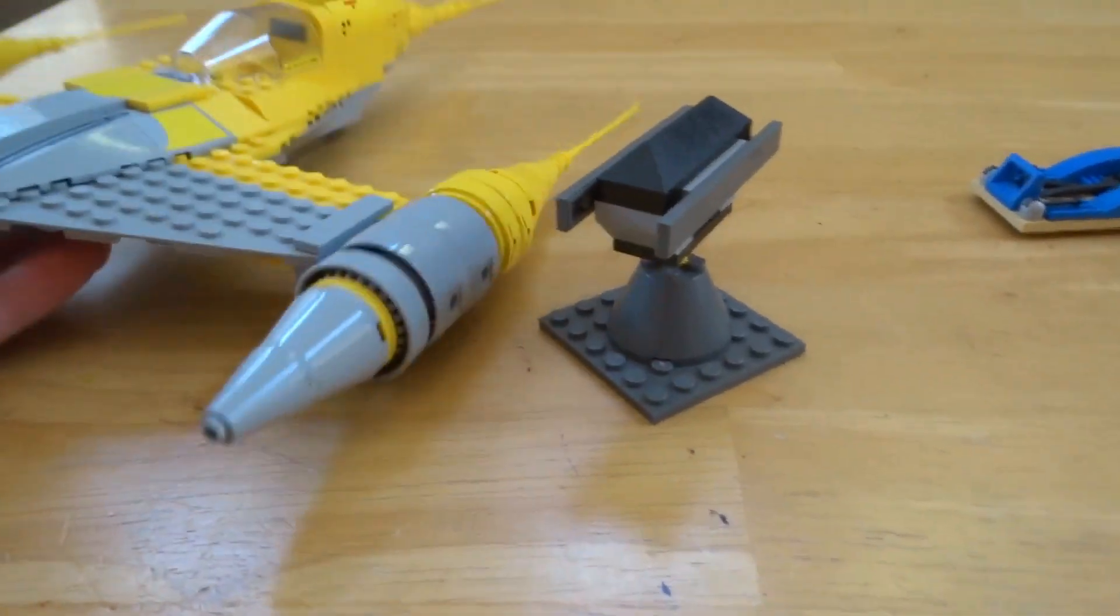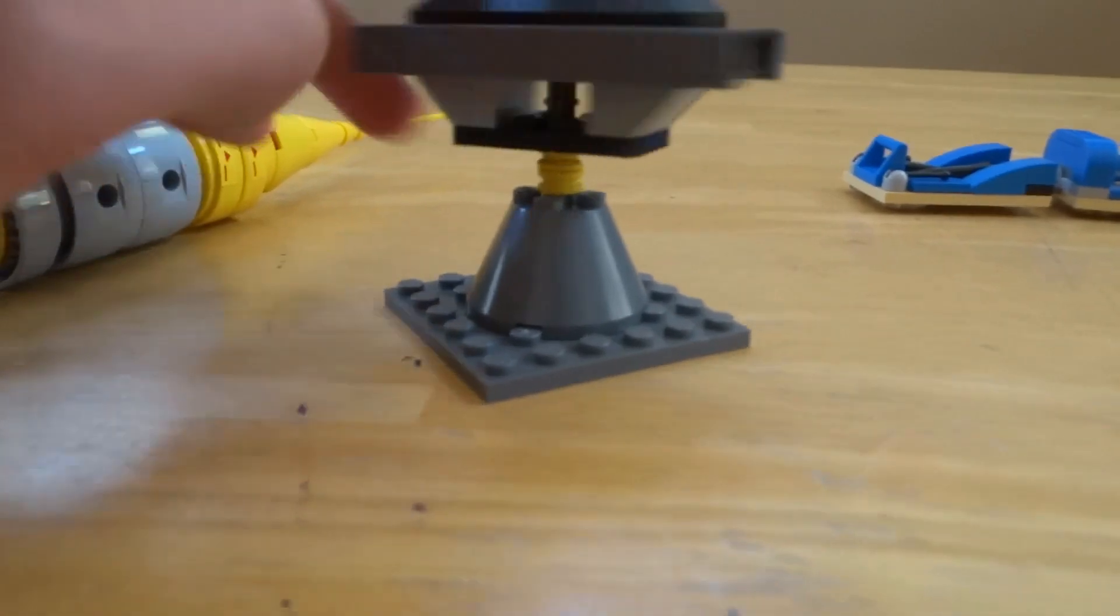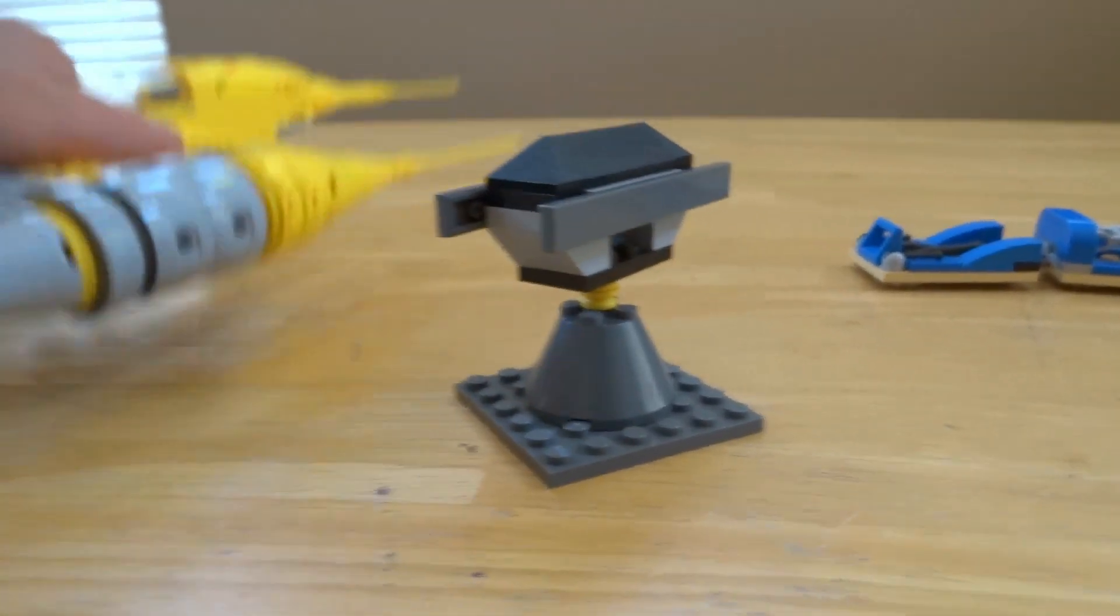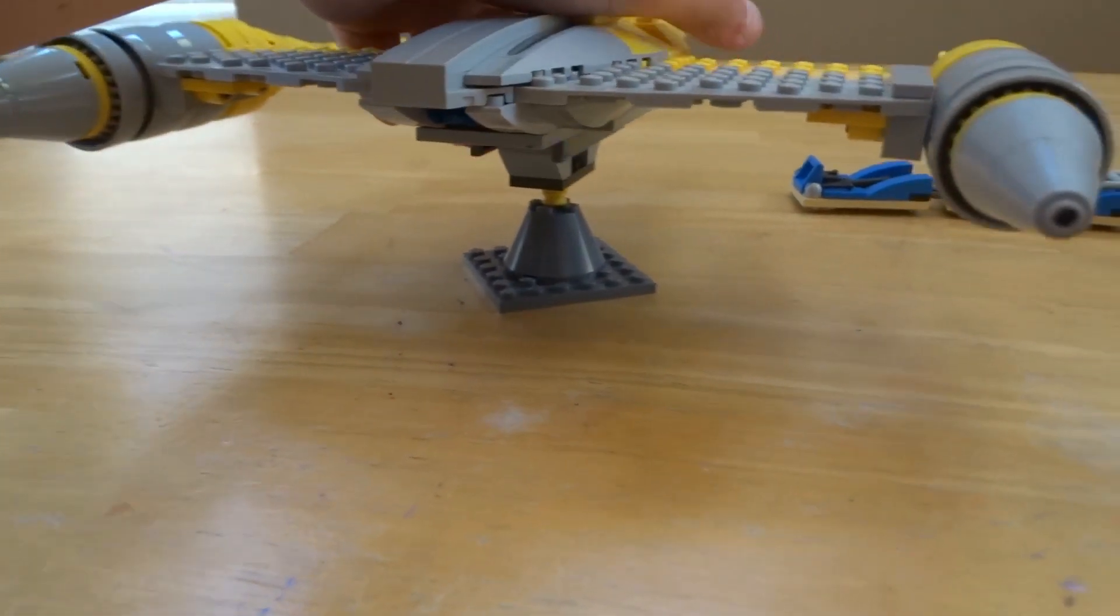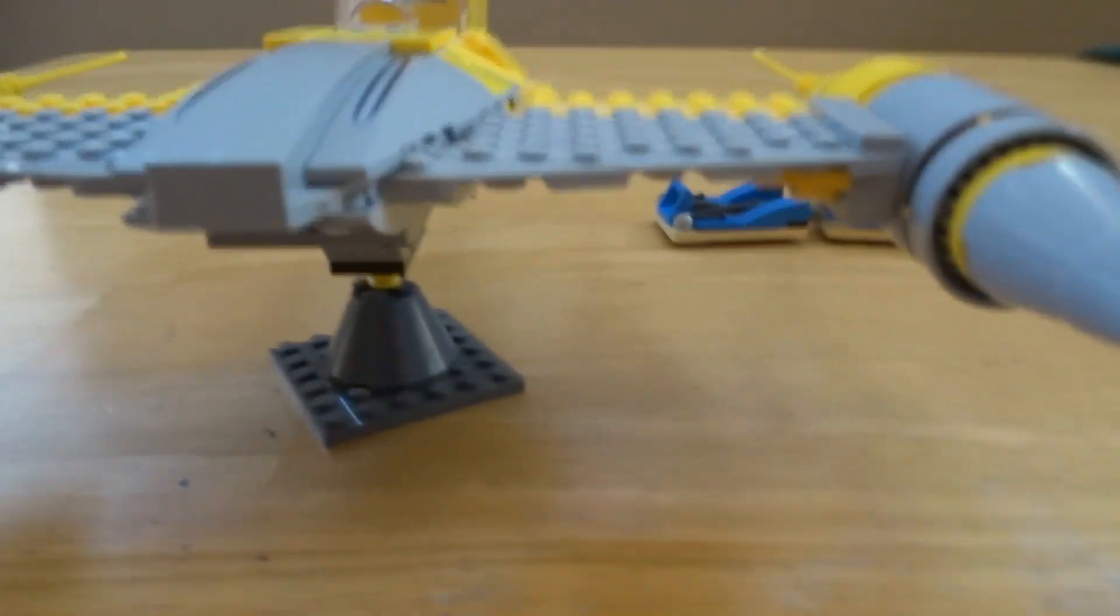For the Naboo starfighter it comes on this little simple stand that can be rotated, and it hooks up on these two smaller pieces where it does connect up to flick fire missiles that do in fact actually work. It can be spun around like this.